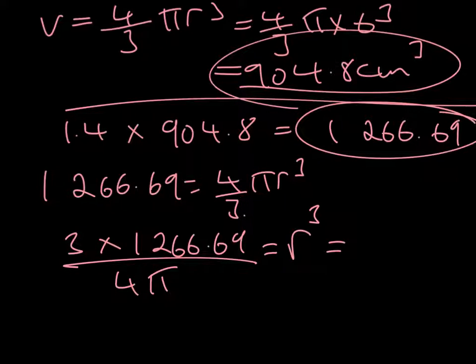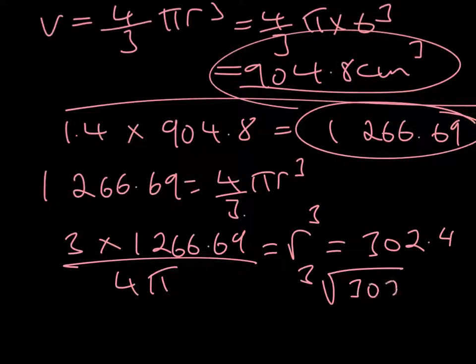So if we take the cube root of 302.4, we end up with an answer of 6.71 centimeters.